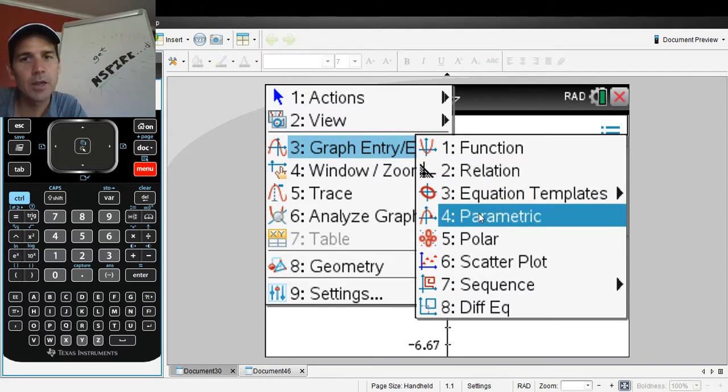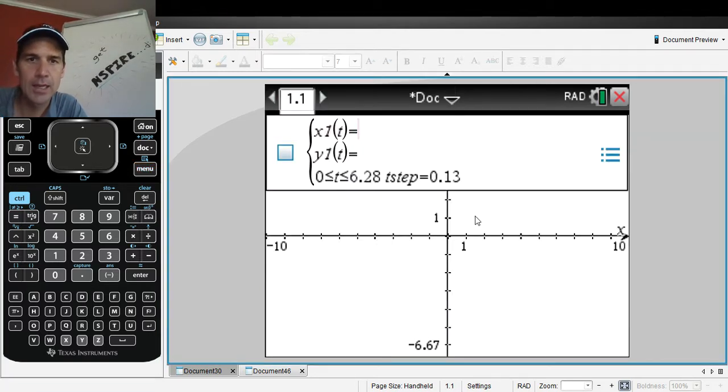We're doing parametric, number four. Click on it. x1(t) - let's make that 2sin(t). Now watch, if you do 2sin t, see how it's italicized? It doesn't recognize that. You gotta do parenthesis (t) - boom. See the sine stays normal font.